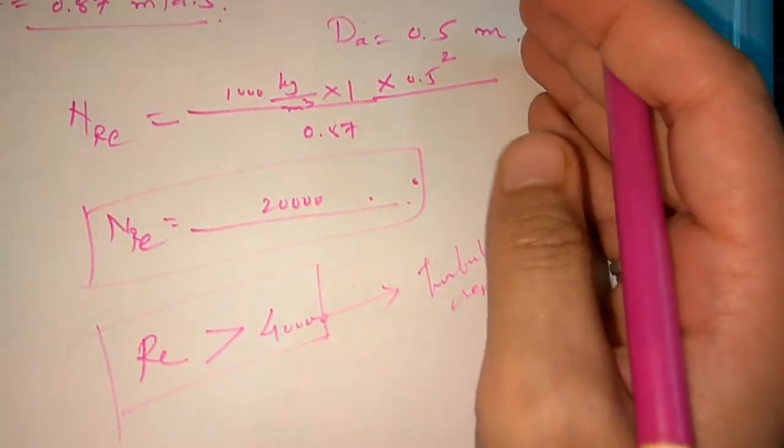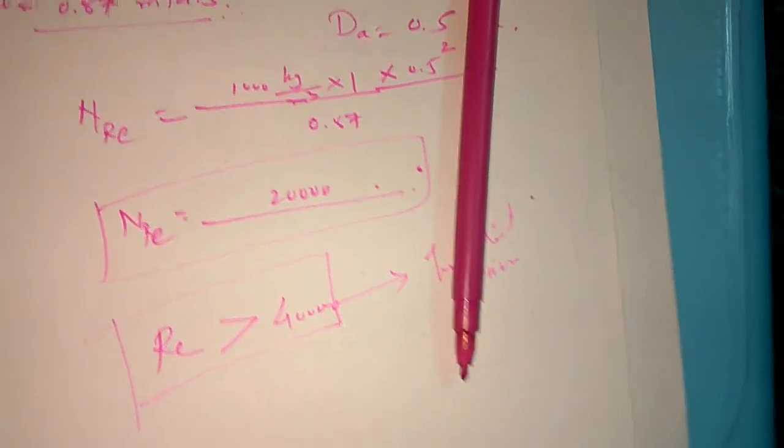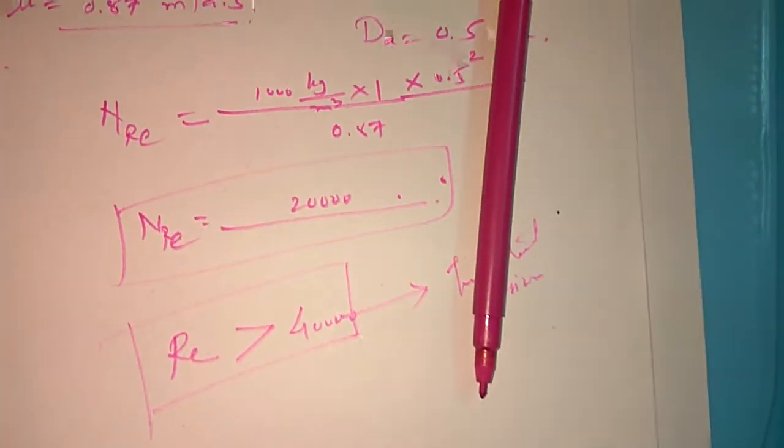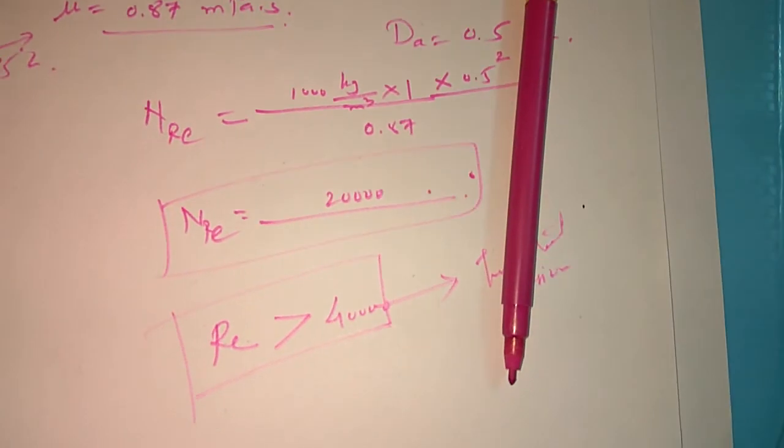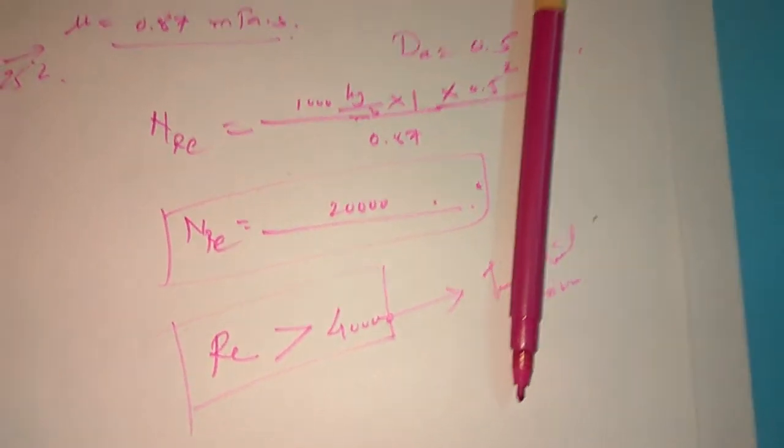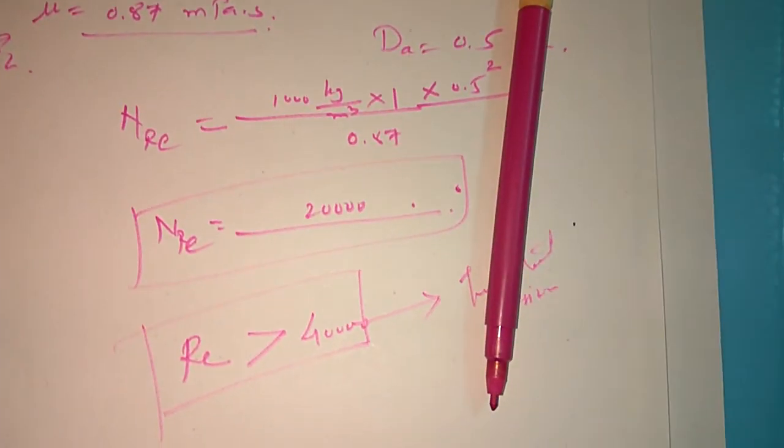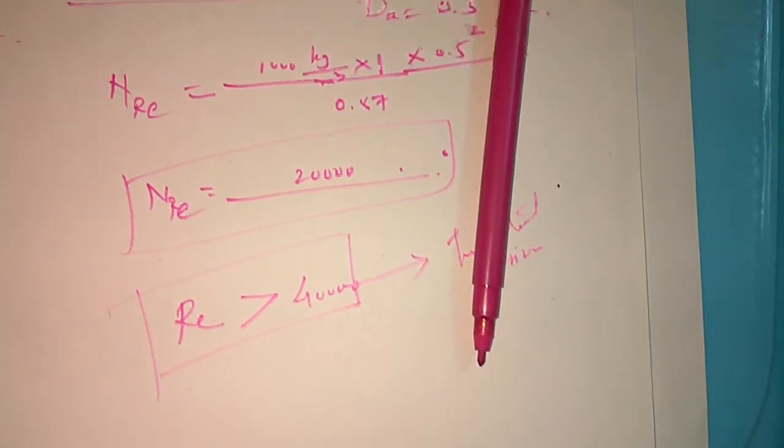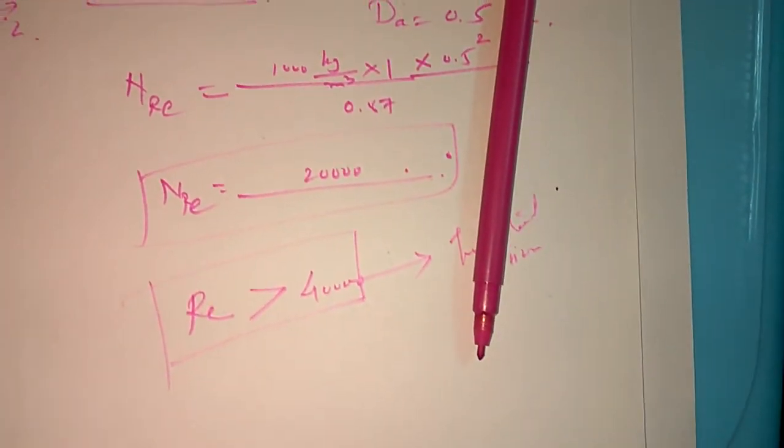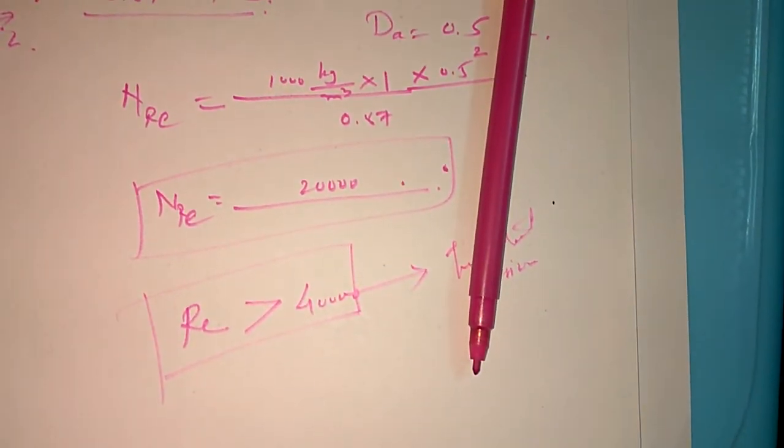And we all know that if Reynolds number is greater than 4000, then this will be called turbulent region in the reactor. So this is how we can find out the Reynolds number for the agitation problems that are mainly for scale-up and technology transfer purpose.